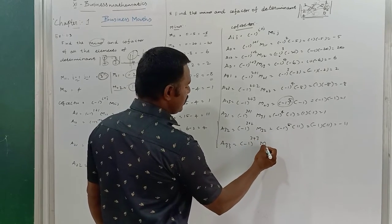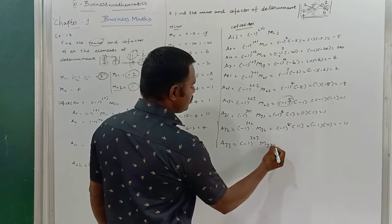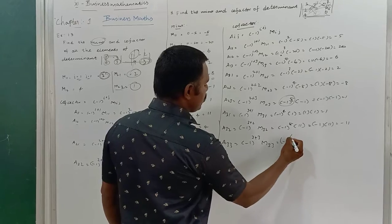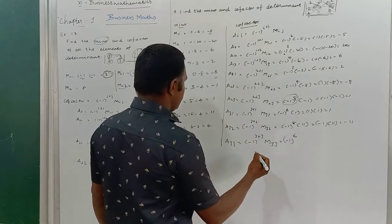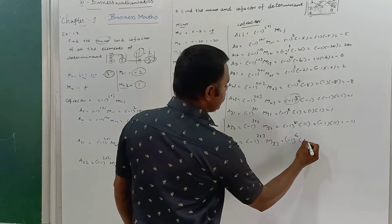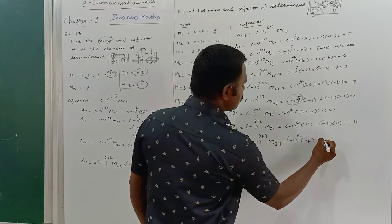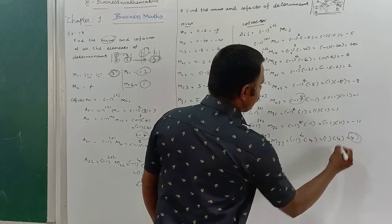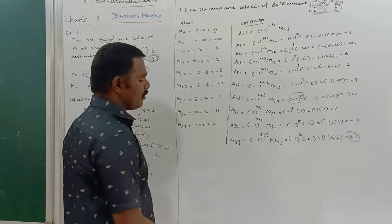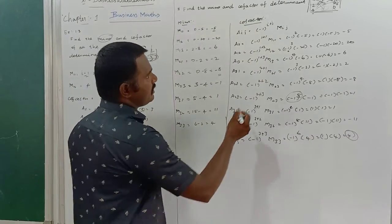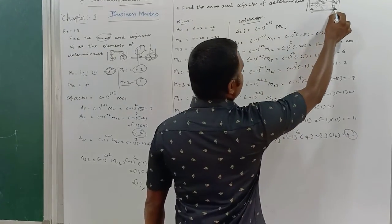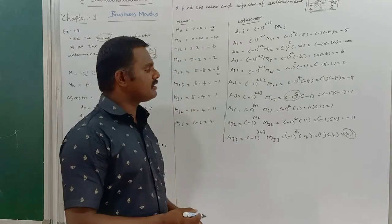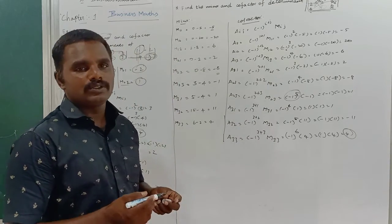A33 = (-1)^(3+3) × M33 = (-1)^6 × 4 = plus 1 × 4 = 4. This is the cofactor of A33, which is the element 0.